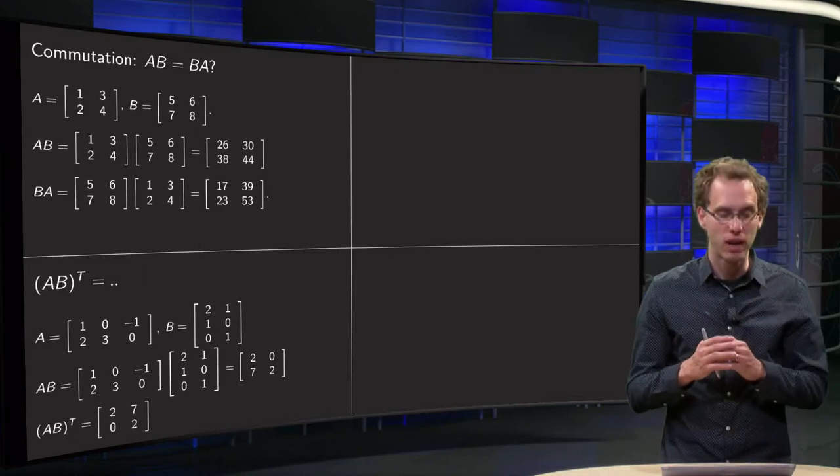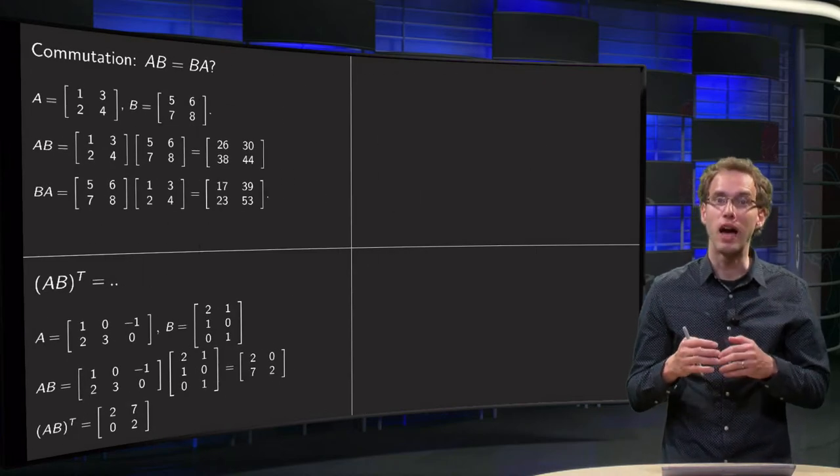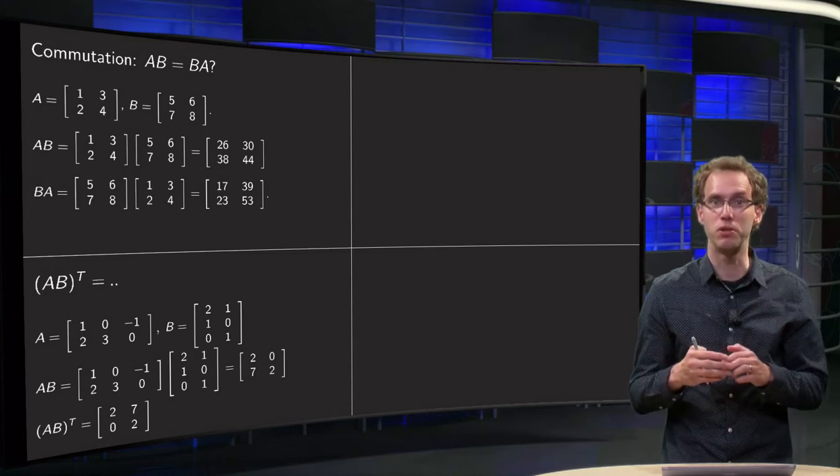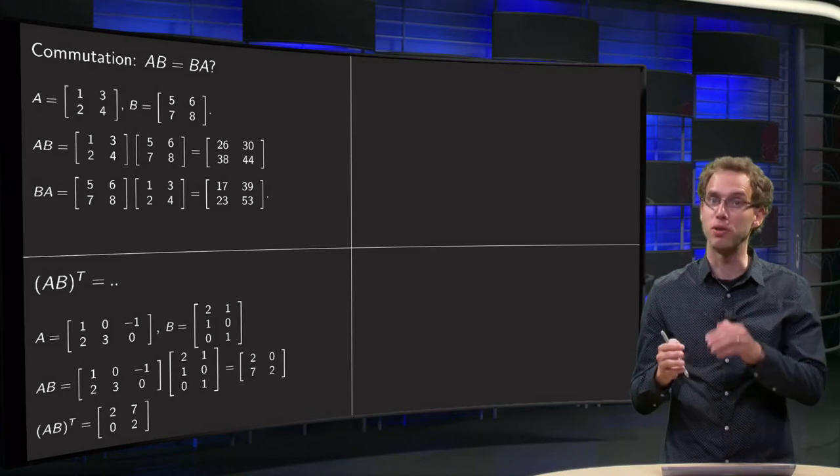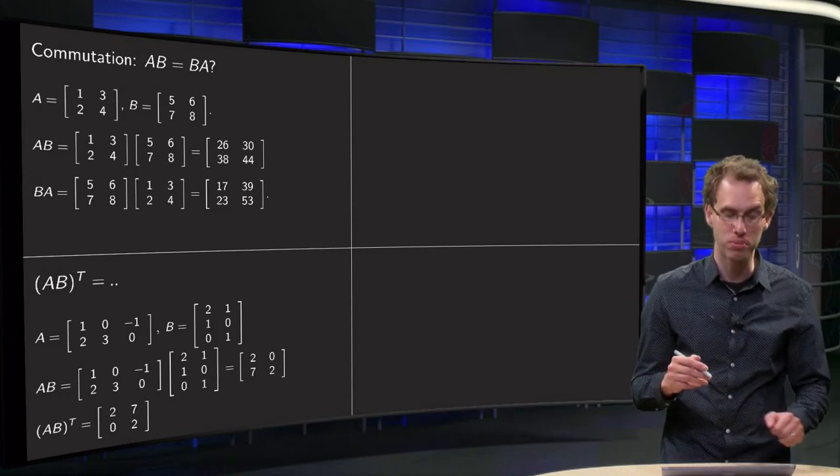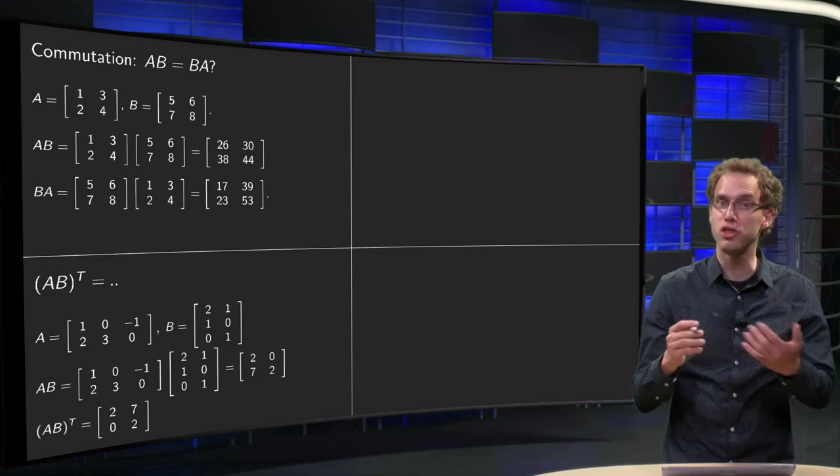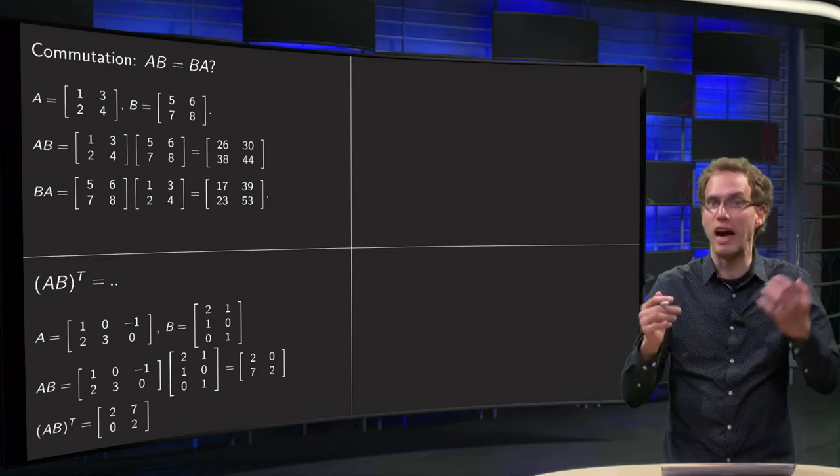Now we are going to look at the transpose. What happens if we take the product of a transpose, A times B transpose? Would we get A transpose times B transpose or something else? Well, let's try an example to see what happens.